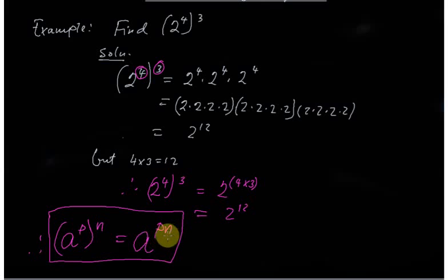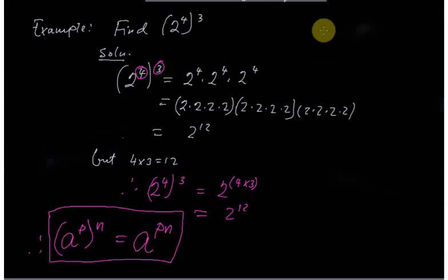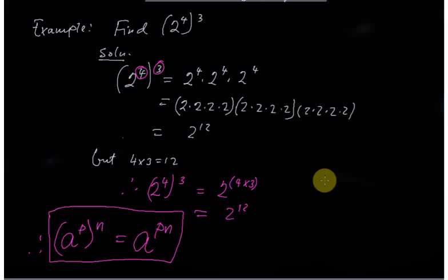As a general formula: a to the power p, all to the power n, equals a to the power p times n — without a bracket. You can prove this yourself using examples.